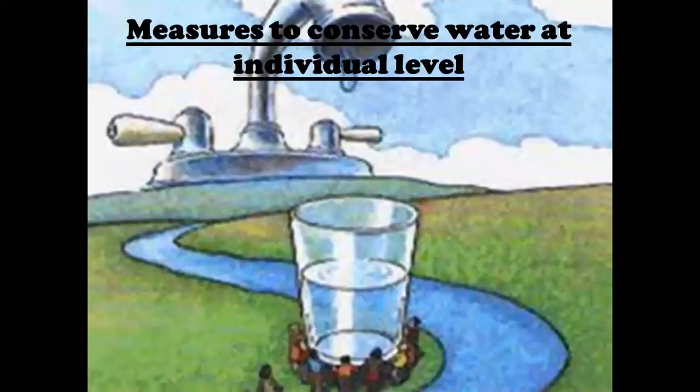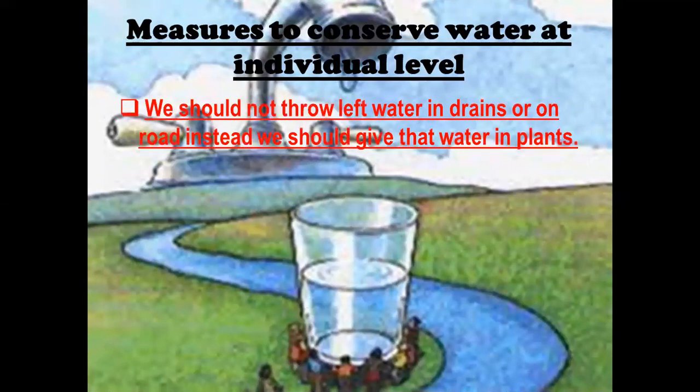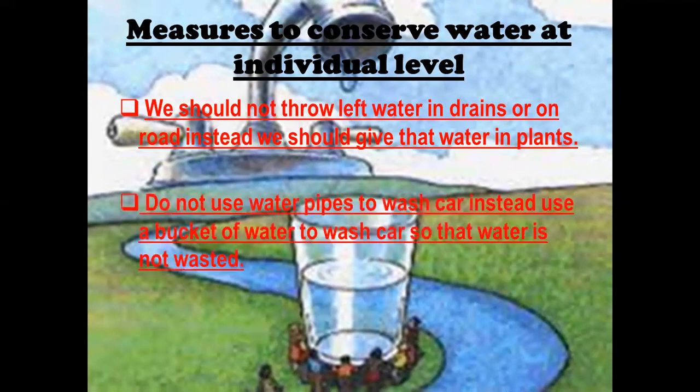Measures to conserve water at the individual level: We should not pour leftover water in drains or on the ground; instead, we should give that water to plants. Do not use water taps to wash items — instead use a bucket of water.